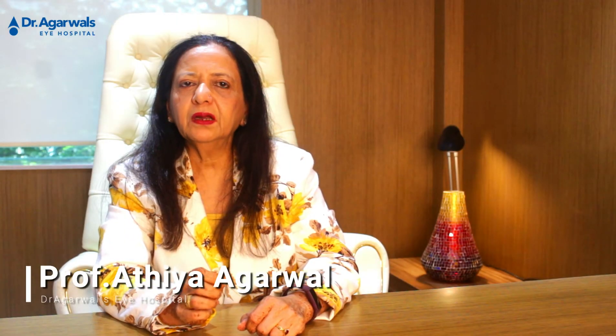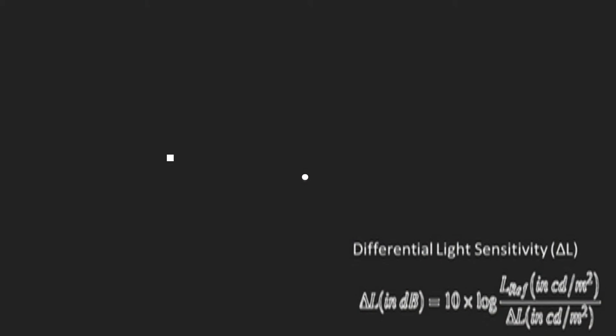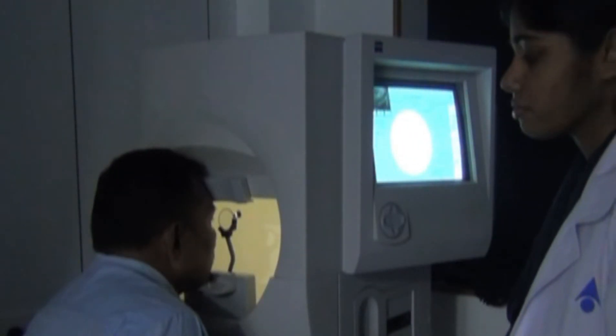Perimetry, a test procedure used to diagnose many ocular and neurological diseases, is a systematic measurement of the visual field — a portion of space visible when gazing in one particular direction. It is measured in terms of differential light sensitivity units and primarily revolves around detection of a small target on a uniform background.